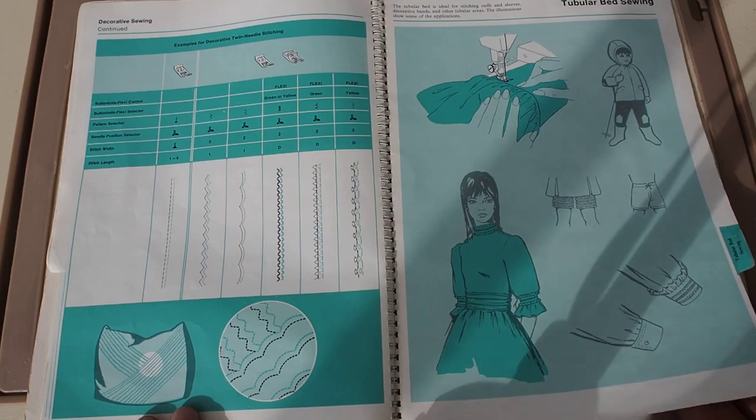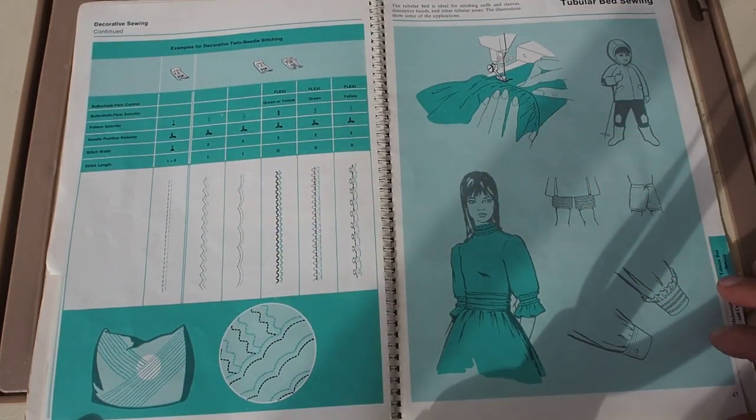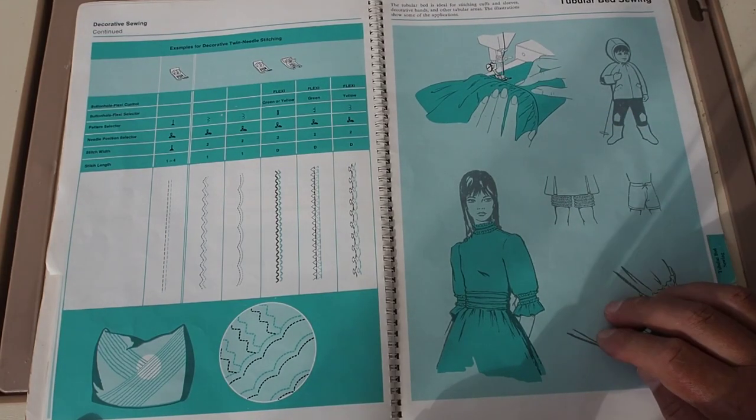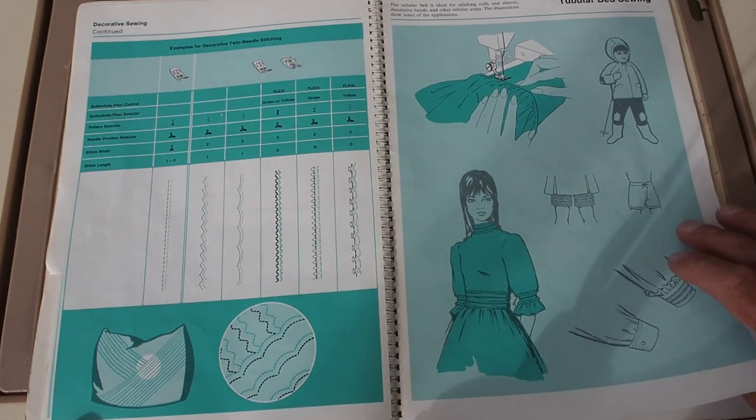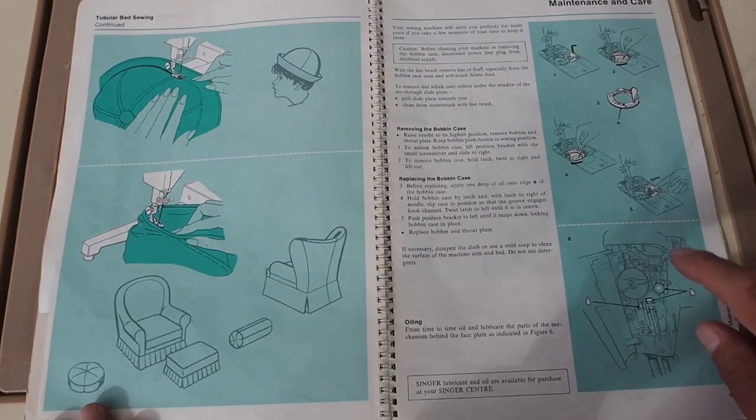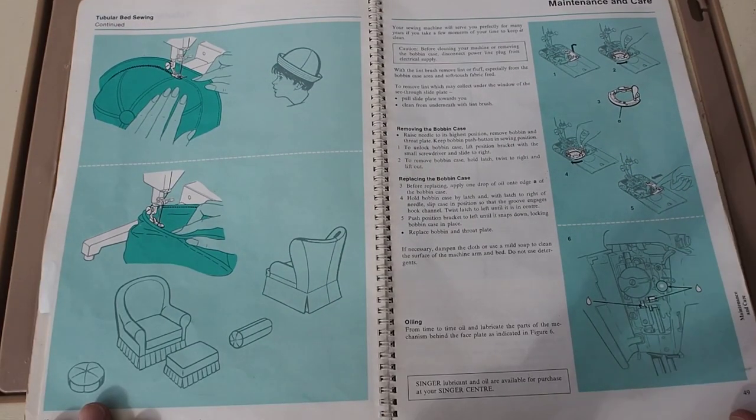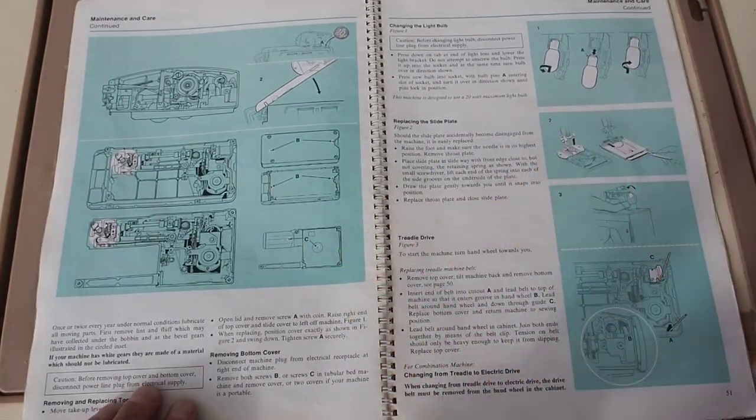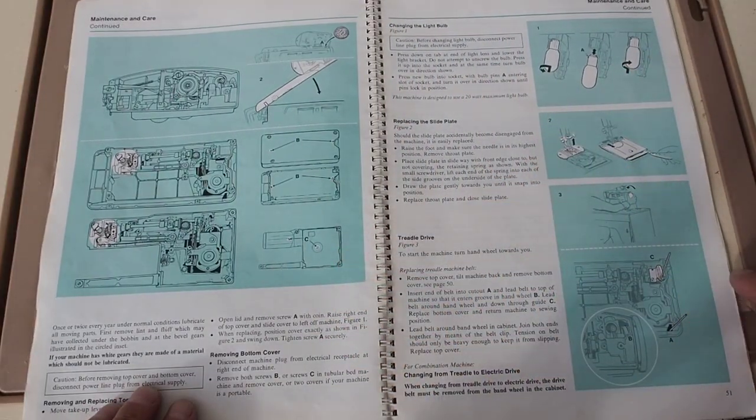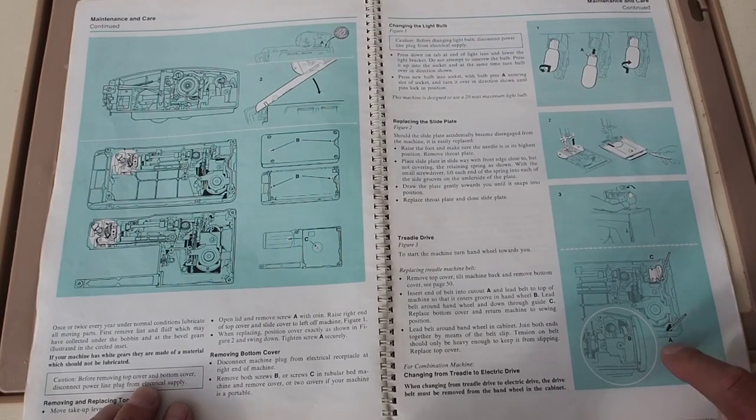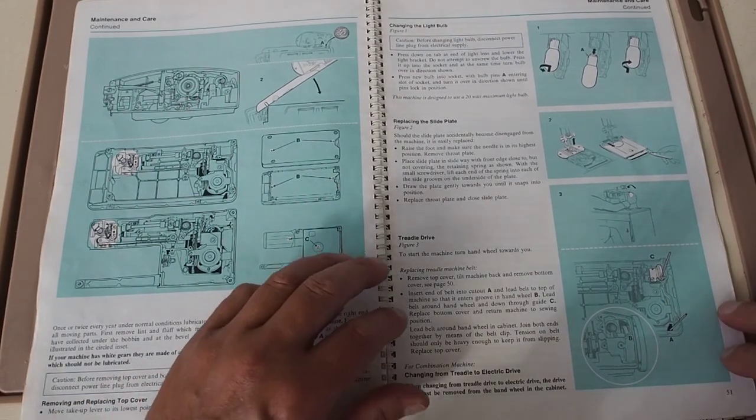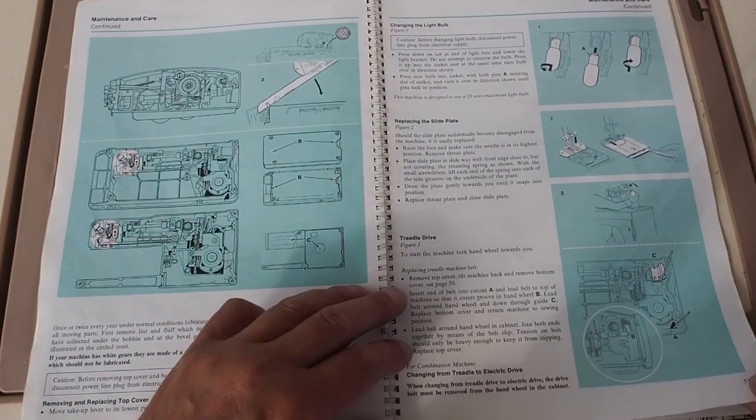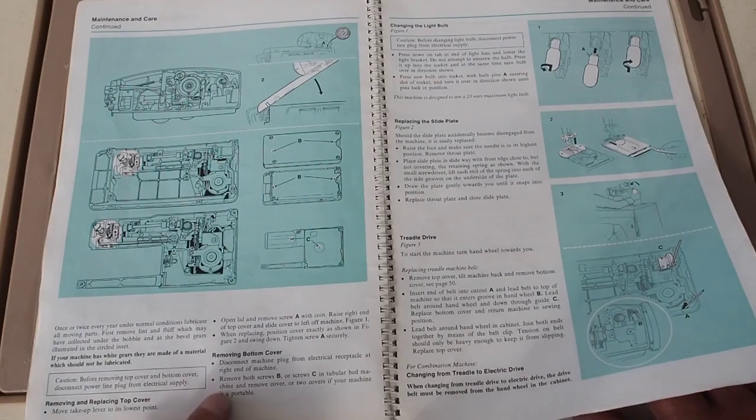Tubular bed sewing - that's what's otherwise called a free arm, doing your sleeves and pant legs, things like that. Then we go into a bit of maintenance here - lubrication, cleaning, replace the bulb, removing the plates, converting to a treadle drive. That'd be an interesting thing to try out - convert this sort of 1970s style machine to a treadle. I quite like the idea of doing that.